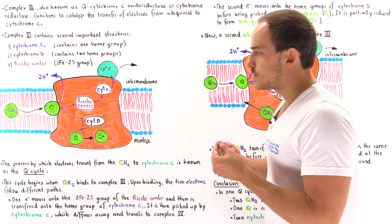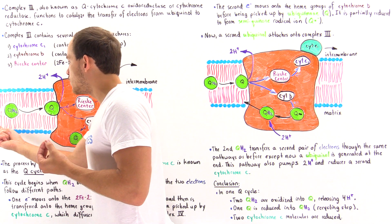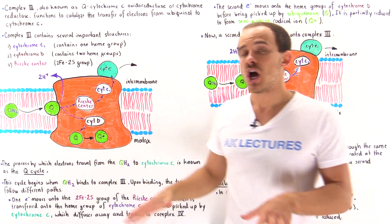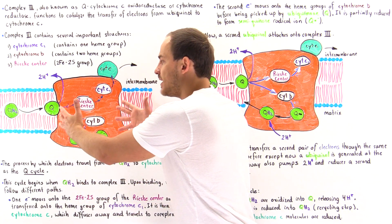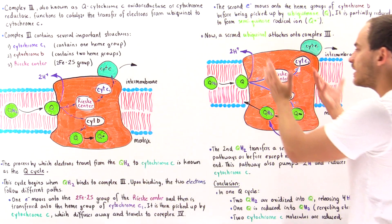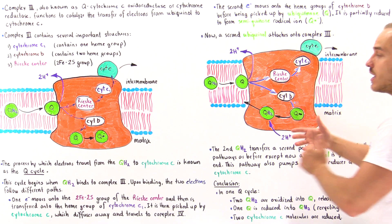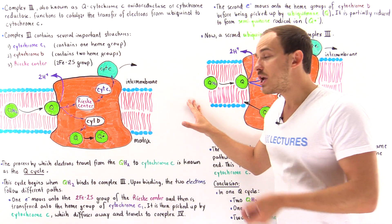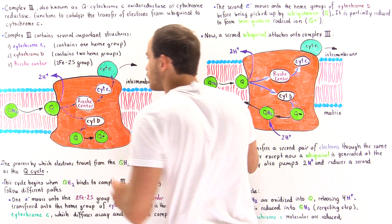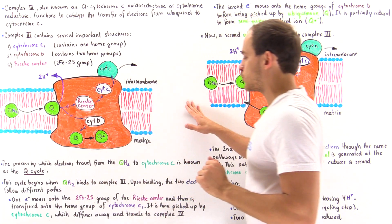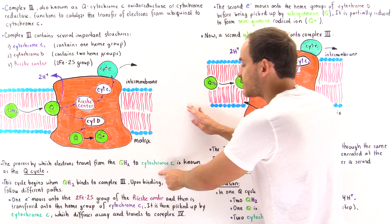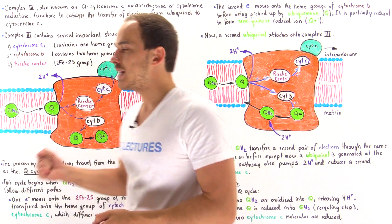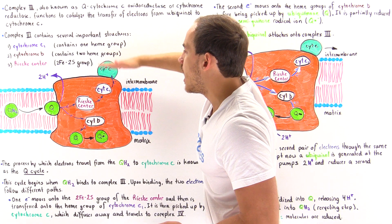The entire process by which electrons are transferred from ubiquinol onto cytochrome C is known as the Q cycle, and the Q cycle is composed of two major mini cycles — a first half cycle and a second half cycle. Together these two half cycles make up a single Q cycle. Cytochrome C is a water-soluble protein attached onto the intermembrane space side of complex three.